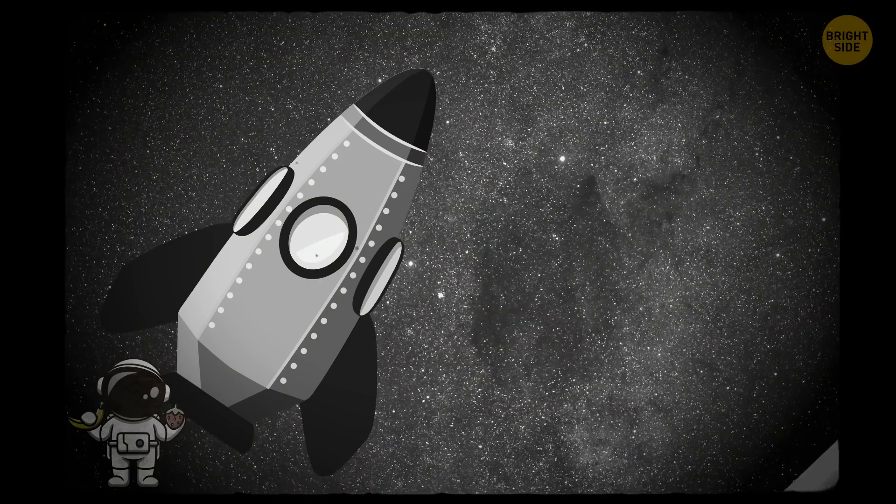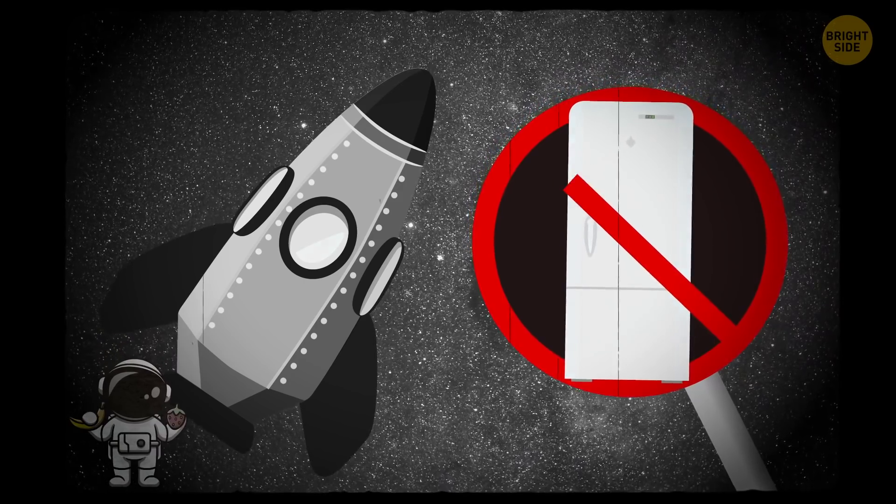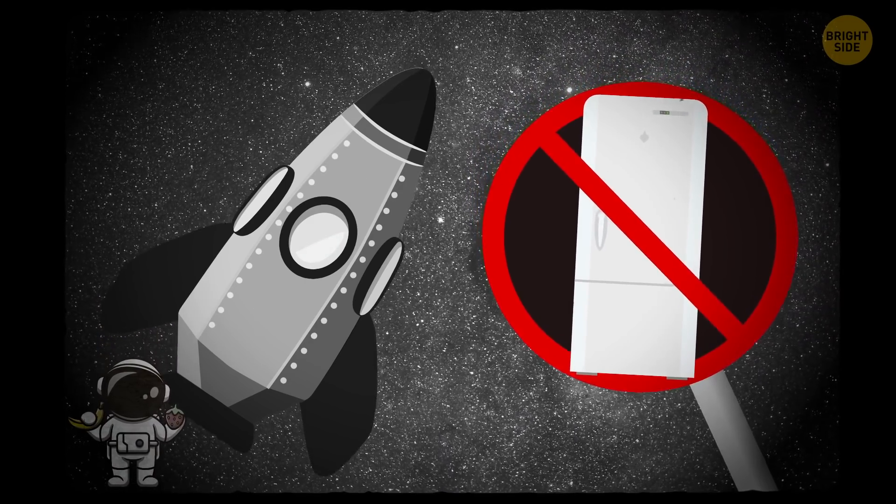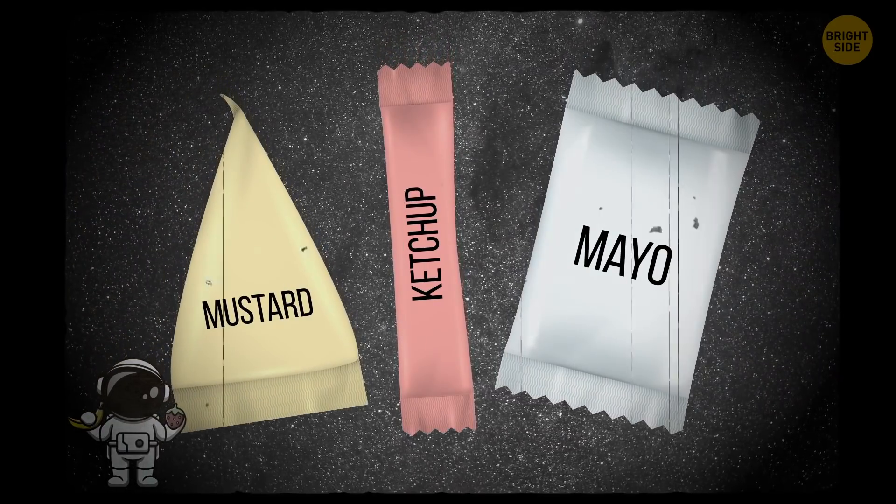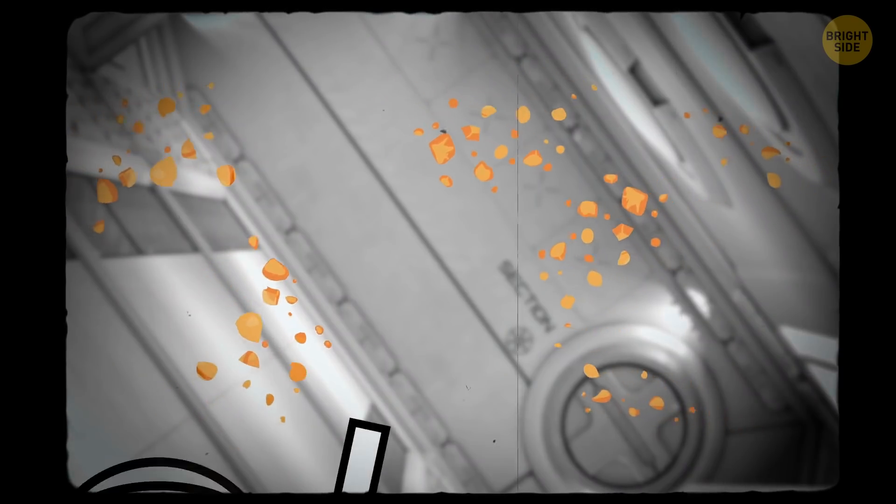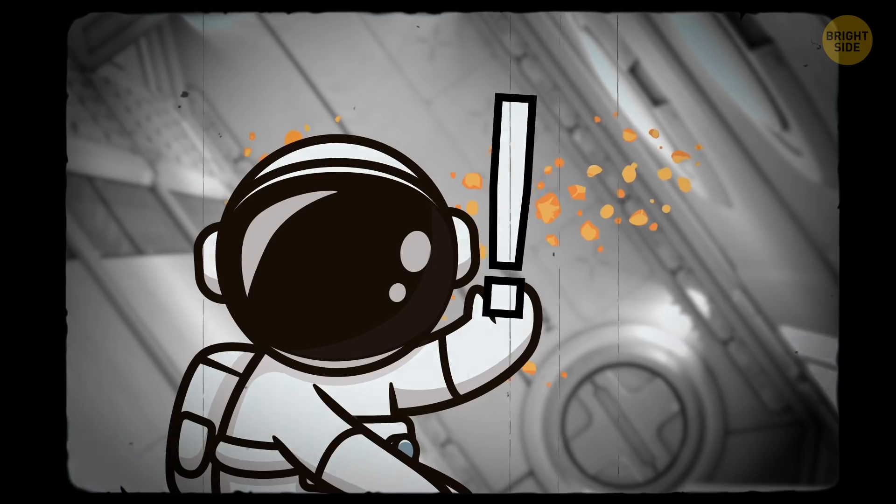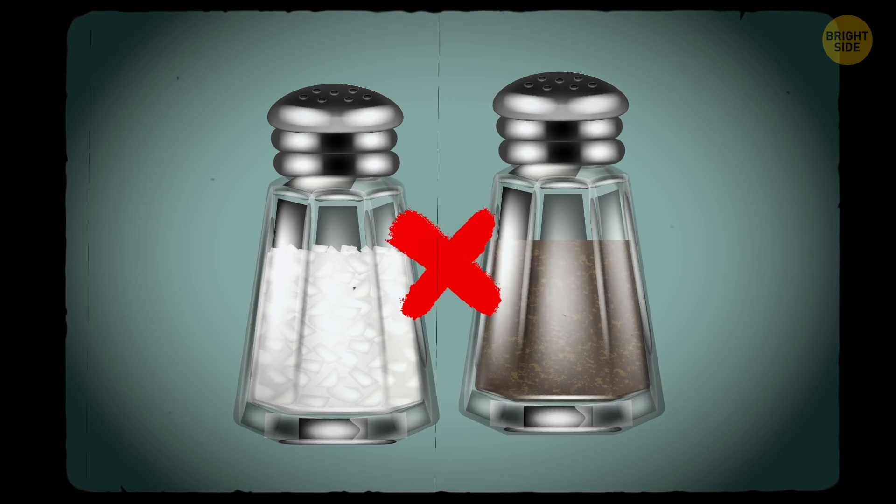Bad news? There are no fridges in space, so you can't save leftovers for tomorrow. Good news? You have a variety of condiments: ketchup, mayo, even mustard. They're actually very important. Remember, you can't sprinkle anything in space. It concerns salt and pepper, too.